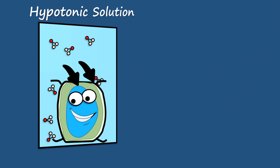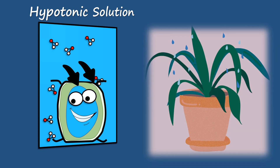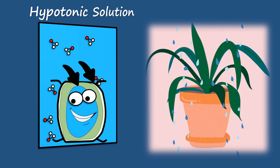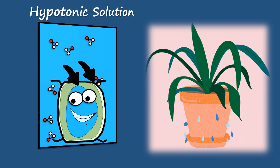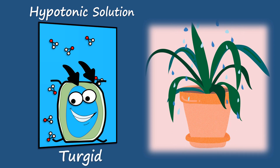In the case of plant cells, the hypertonic condition is the ideal condition. When the plants are properly watered, most of the water goes inside the cell, creating a turgid cell.